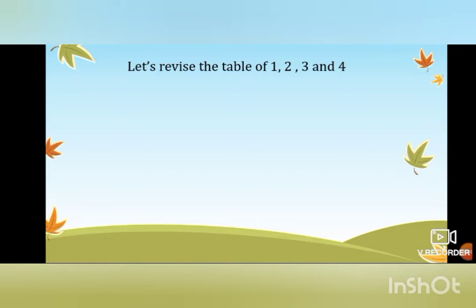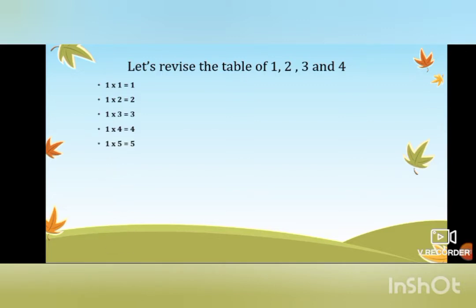Let's begin with the table of one. One one is one, one two is two, one three is three, one four is four, one five is five, one six is six, one seven is seven, one eight is eight, one nine is nine.